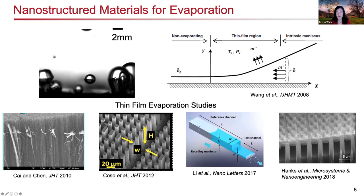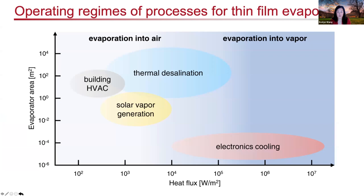There are certain operating regimes for thin-film evaporation relevant for different applications. Looking at a regime map of evaporative fluxes versus area of evaporation, evaporation in air is relevant for thermal desalination, building HVAC, and solar vapor generation. However, for electronics cooling in a closed system, evaporation into vapor becomes very important, with significant fluxes over small areas. This maps out how we optimize devices for different application spaces — whether evaporation to air or evaporation into vapor.